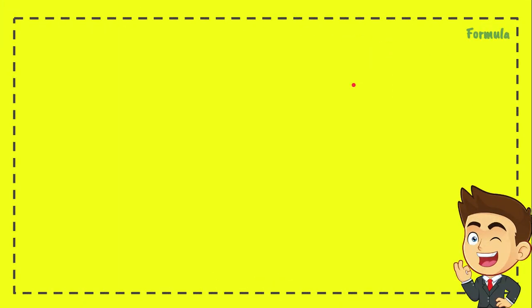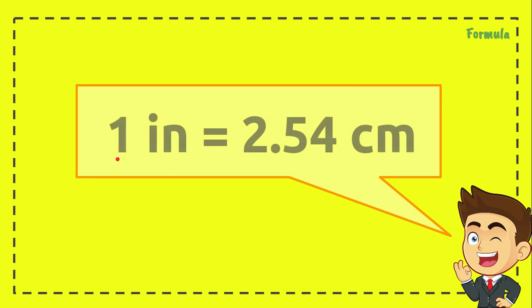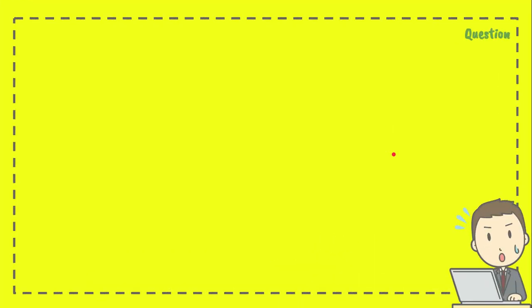To solve that question, first we need the conversion factor, or you can call it formula as well. This is the conversion factor of inch to centimeter: 1 inch equals 2.54 centimeters.